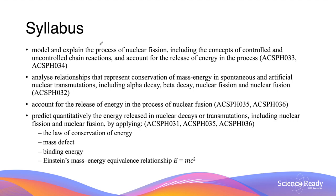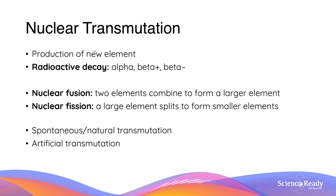Hey everyone, welcome to the video on nuclear fission. Nuclear fission is a type of nuclear transmutation, and by way of review, transmutations are processes that produce a new element by changing the number of protons in the nucleus.